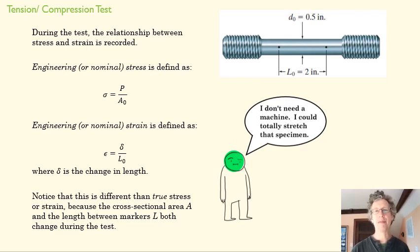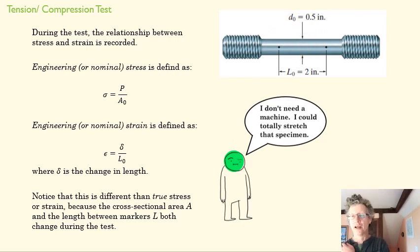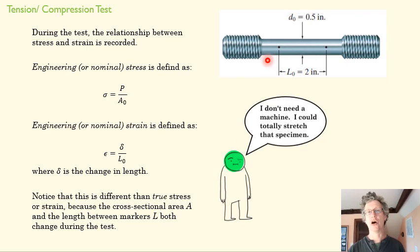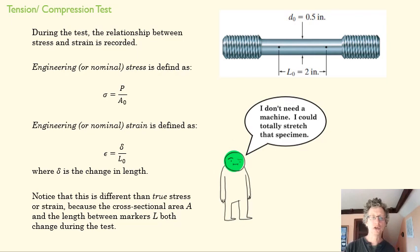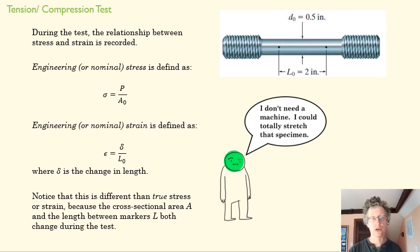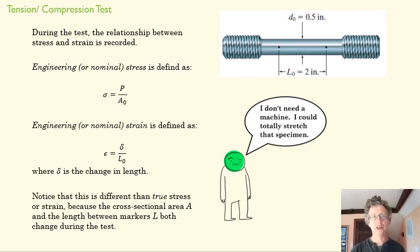As you pull on the specimen and stretch it, the cross-sectional area is actually going to change — if you spread the same mass over a longer length, it's going to be skinnier. When we talk about engineering stress and strain on a stress-strain diagram, this doesn't account for that. We continue to divide by A₀ and L₀. If we want true stress or true strain, we'd track the changing diameter and length. Engineers in most fields almost always use nominal or engineering stress.